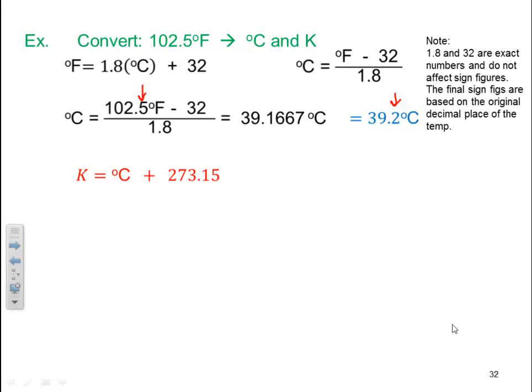Now we've got to get our Kelvin. So that's simply just taking my degree C and plugging that into my equation. It's 39.2 degrees C plus 273.15, which gets me 312.4 Kelvin once again to the tens place.